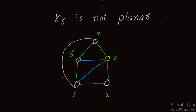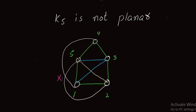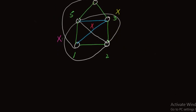Now we move to vertex 2. Vertex 2 is already connected to vertex 1. We now have no viable choice to connect vertex 2 and vertex 5. If I choose this path there is an edge crossing; if I choose another path there is again an edge crossing. Similarly, all possibilities of connecting vertex 5 and vertex 2 result in an edge crossing, and edge crossing is not allowed. So K5 is not planar.